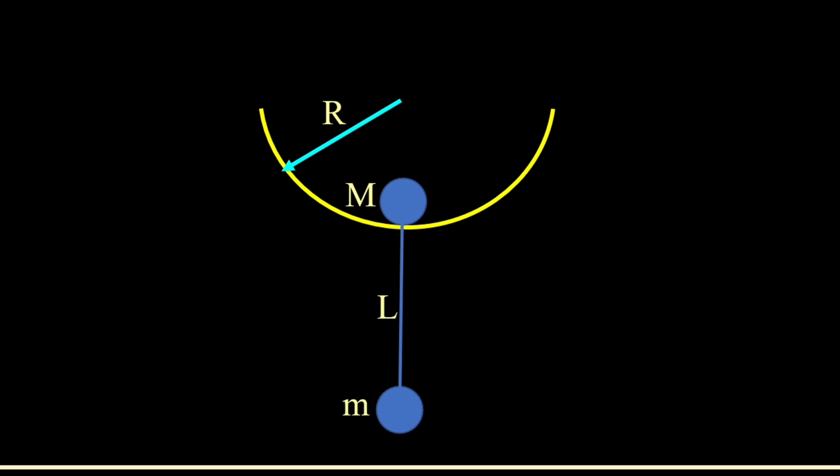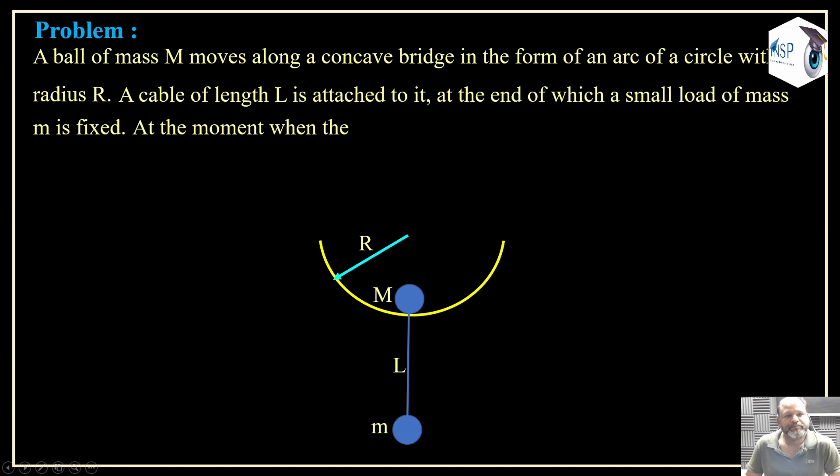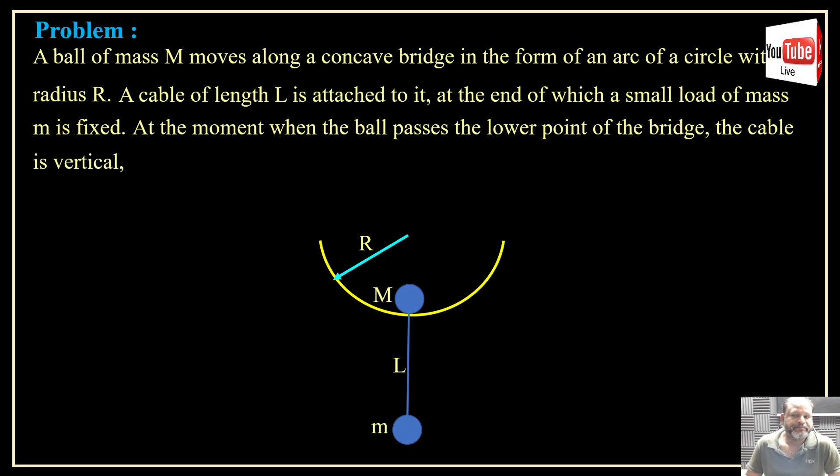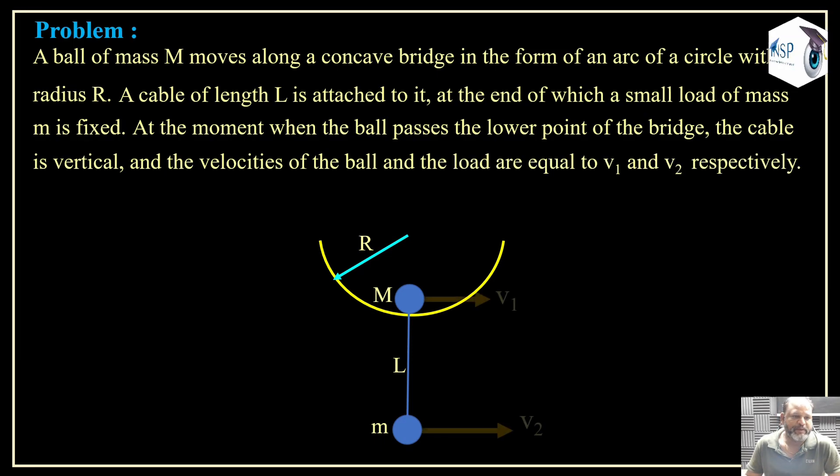Now, at the moment when the ball passes the lower point of the bridge, the cable is vertical and the velocities of the ball and the load are equal to v1 and v2 respectively. This is given to you in the figure, I hope you can see it.